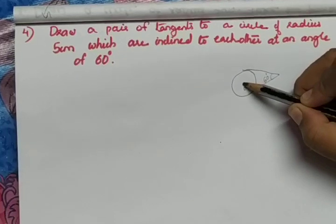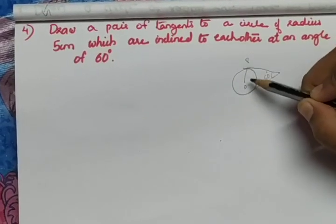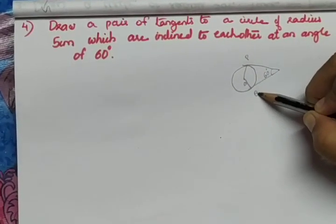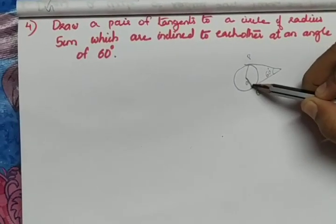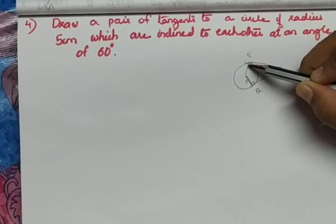We will mark the center O, let this be radius and this be another radius. O, P and O, Q are the radius and we know that they are perpendicular to the tangent. This is 90, this is 90.